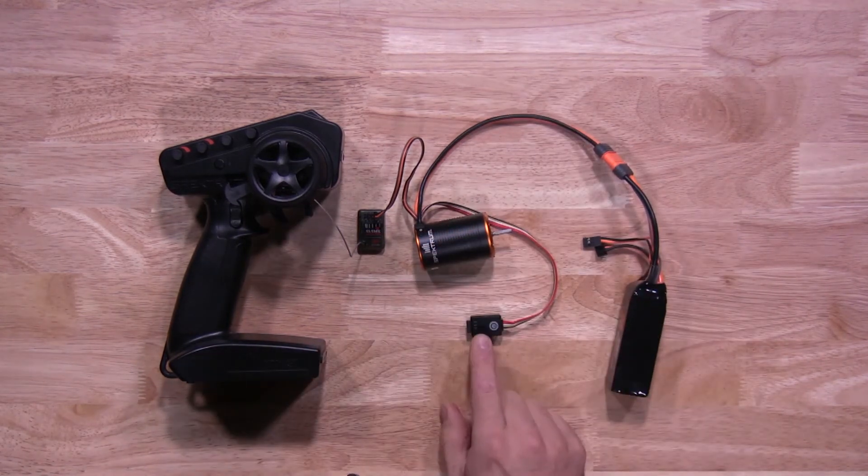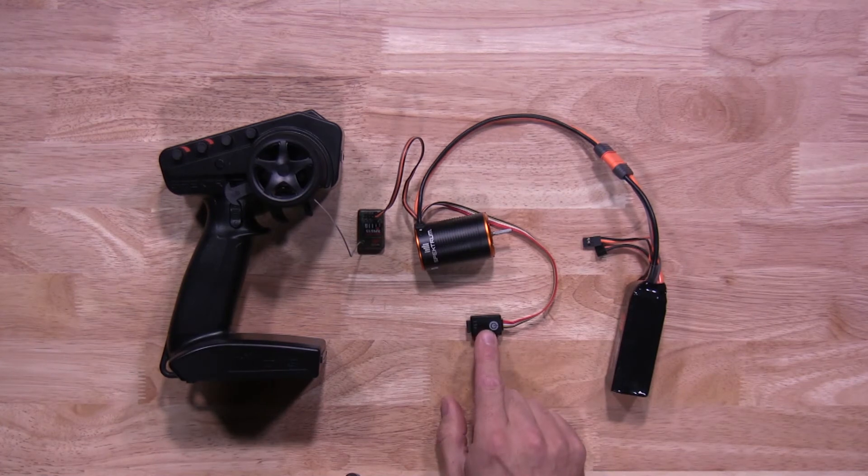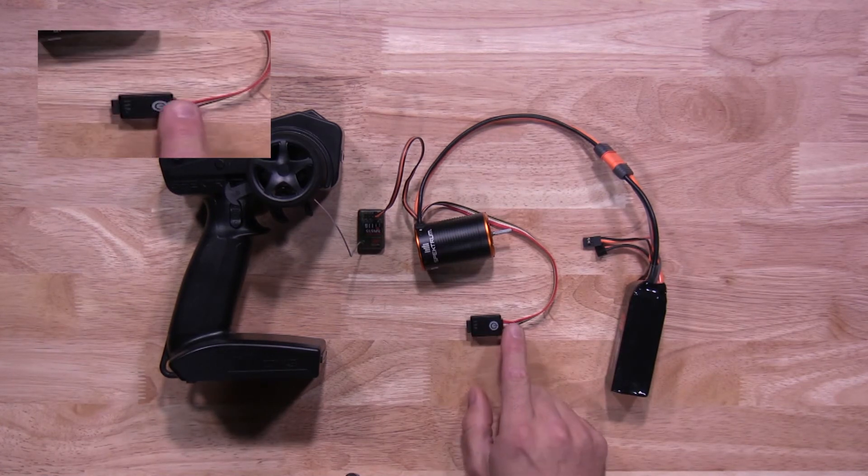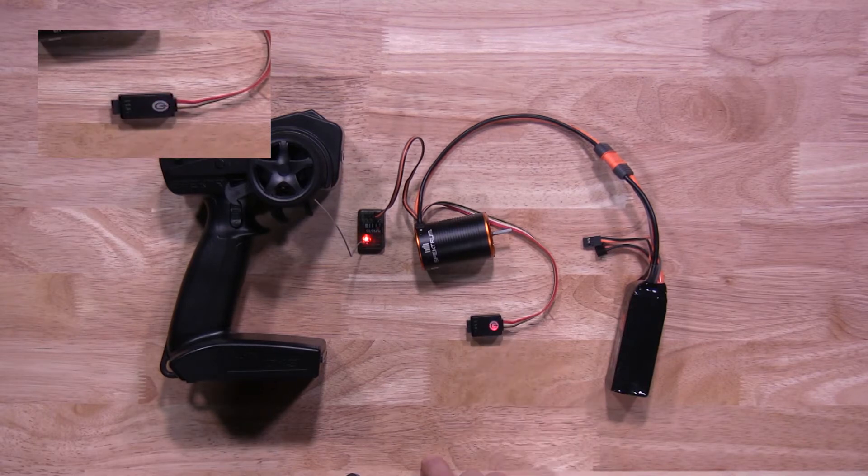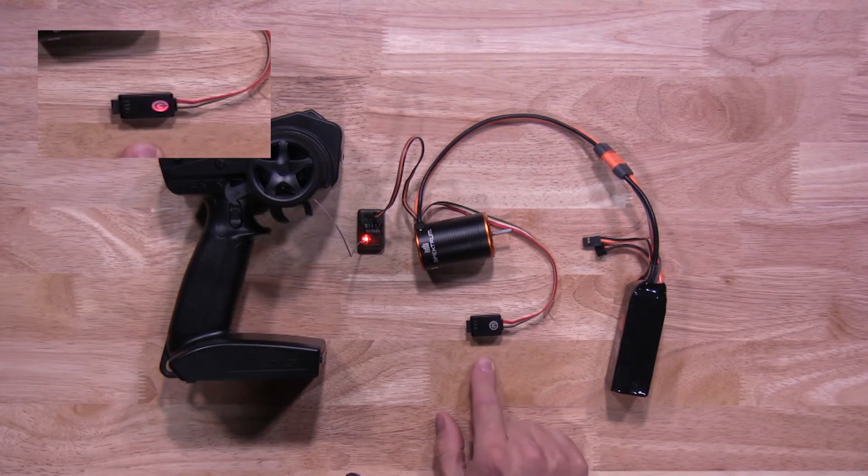Once you have that plugged into a battery, you're going to hold down the on-off button for at least five seconds until you see the red light flash. Once you see it flash, you can let go. That'll let you know you're in calibration mode.